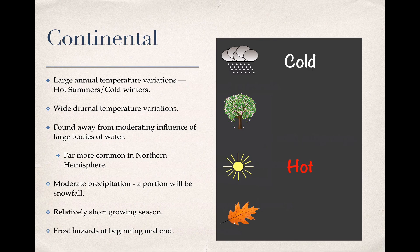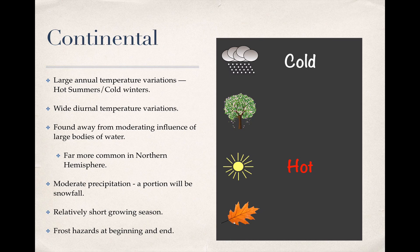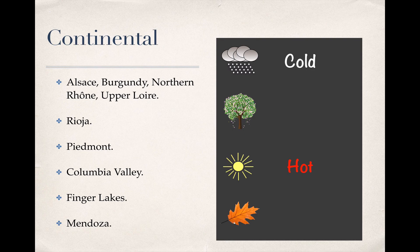Hence the name, since you generally need a continent-sized landmass before you can get this climate. This in turn means that this climate is much more common in the northern hemisphere than in the southern, since the southern hemisphere contains relatively few large landmasses, especially in the grape-friendly latitude areas. Precipitation is moderate in this climate, with a portion of it usually being snowfall that will turn into spring runoff. The growing season is short relative to the other climates, and frost, hail, and other cold-related hazards can be issues for grape growers at the beginning and end of the season, as can the possibility that an especially cold winter can kill vines during their dormant period. A climate like this is usually found in the interior regions of a wine-producing country, or, if not very far inland, at least removed from the influence of the ocean by mountain ranges or higher altitude. Inland regions of France like Alsace, Burgundy, the northern Rhône, and the upper Loire fit this bill, as do Rioja in Spain, the Piedmont in Italy, the Columbia Valley in Washington state, New York's Finger Lakes, and, a relative rarity for the southern hemisphere, Mendoza, Argentina.